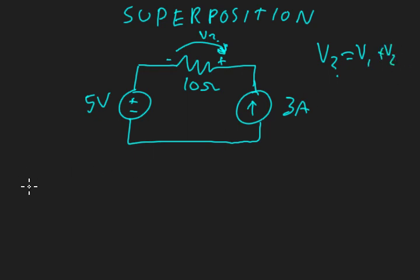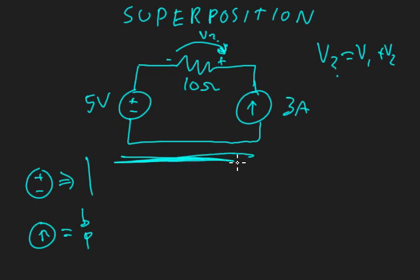Two key points to remember when doing this, and this is really something you should memorize, is that if we have a voltage source that we're not considering, we replace it with a closed circuit. If we have a current source that we're not considering, we replace it with an open circuit. That will make more sense when I split this up right now.